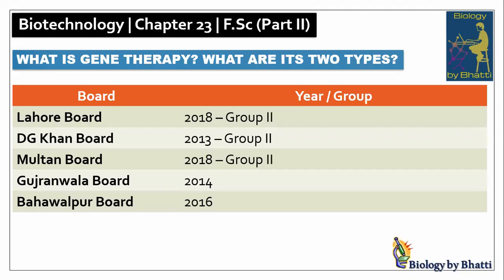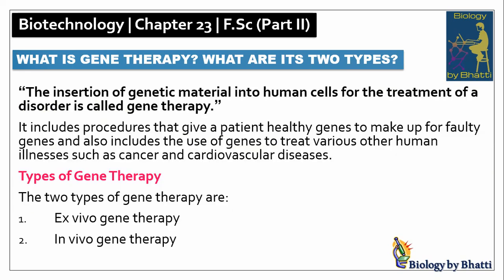Short question number six: What is gene therapy and what are its two types? Past paper references: Lahore board 2018 group 2; DJ Khan board 2013 group 2; Multan board 2018 group 2; Gujranwala board 2014; Bahawalpur board 2016. The insertion of genetic material into human cells for the treatment of a disorder is called gene therapy. In place of a faulty gene, a corrected gene is inserted and expresses itself to resolve the genetic problem. This treatment can be used for cardiovascular diseases, cancer, and other diseases. There are two types of gene therapy: ex-vivo gene therapy and in-vivo gene therapy.